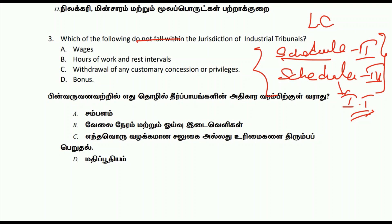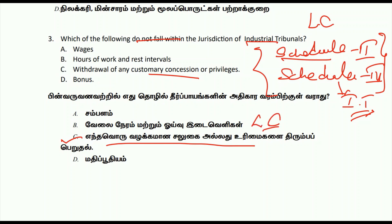In this adjudication, the matters include wages, hours of work, rest interval, withdrawal of any customary concession or privilege, and bonus. Schedule 1 covers labor court and Schedule 2 and 3 cover industrial tribunals. The answer is C — you can read it in the schedule.